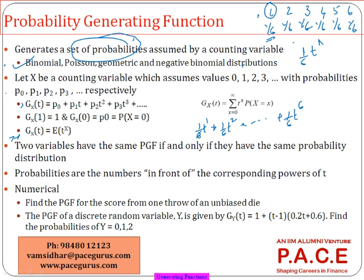In general, if p0, p1, p2, ... are the probabilities associated with getting values 0, 1, 2, ..., then the probability generating function is: p0·t^0 + p1·t^1 + p2·t^2 + p3·t^3 + and so on. In other words, all the probabilities are multiplied by t raised to the corresponding power. In short, the PGF is simply the expected value of t^x.